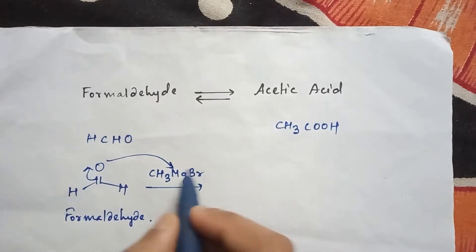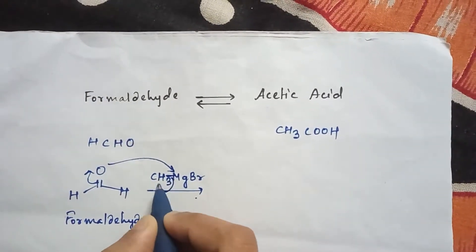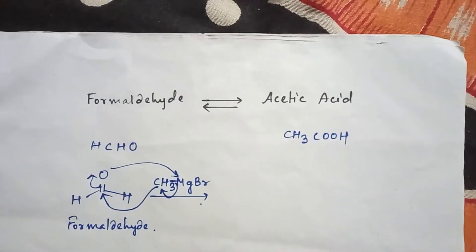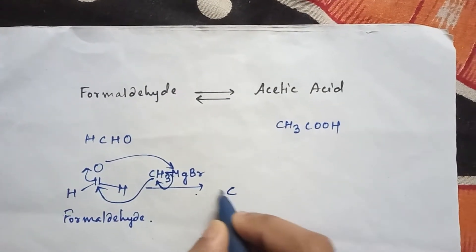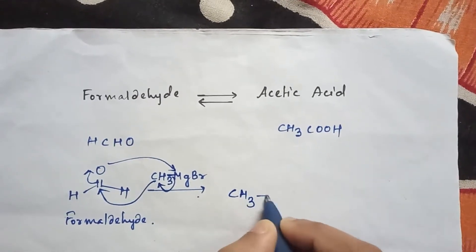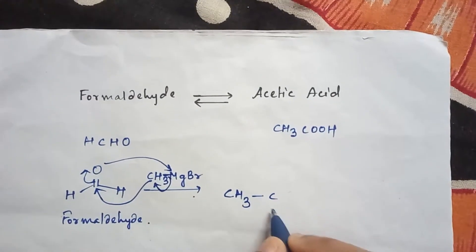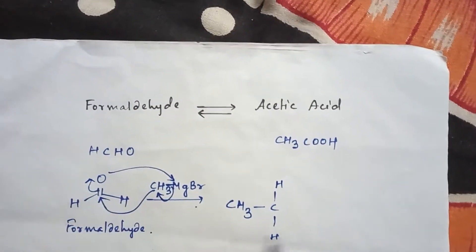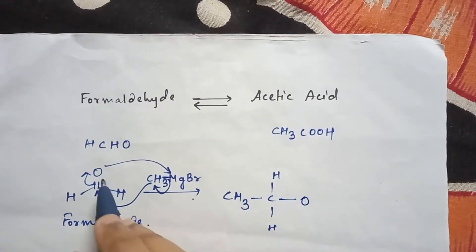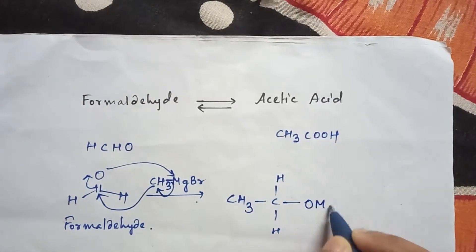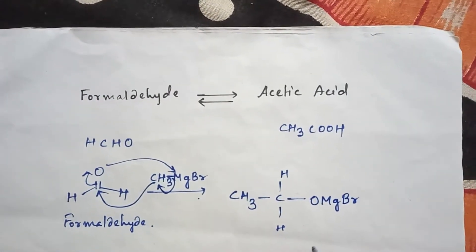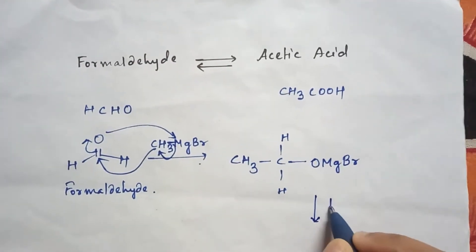And here this bond will break and this CH3 will come here. So the product is CH3CHOH then this oxygen MgBr. Now if you add here water and H+ will come from this water.